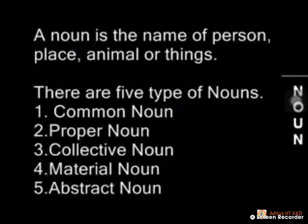Name of a person, for example Raju, Rani — names of persons. Place — name of a place means names of stations, for example Kakinada, Hyderabad. Animals — rabbit, squirrel. Things — book, table, pen.